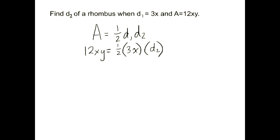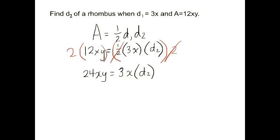So at this point, what we can do is a couple of different things. We can either take 1 half of 3 and then divide that out. Or what I'm going to do instead is multiply this whole thing by 2. You'll notice that the 2 and the 1 half cancel, and then you're left 24xy equals 3x times d2, because 12 times 2 is 24.